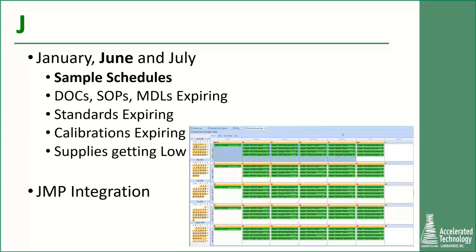J — who knew this would be the toughest letter? I came up with scheduling and date tracking capabilities for January, June, and July, complete with calendars. A LIMS allows you to see at a glance what samples are scheduled for what days, but you can also have calendars showing expiring DOCs, SOPs, MDLs, standards, and calibrations — as well as a CAPA calendar that allows you to track who is responsible for the next steps in the corrective action process. JMP is a statistical software package that can be integrated with your LIMS, providing additional statistical and data visualization capabilities that some labs have benefited from.